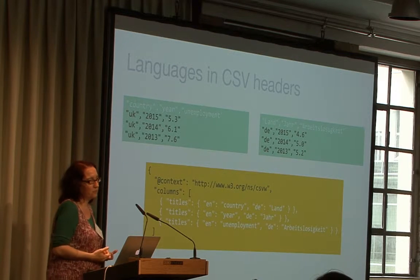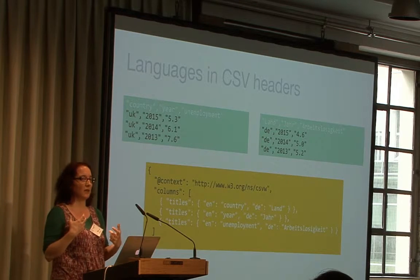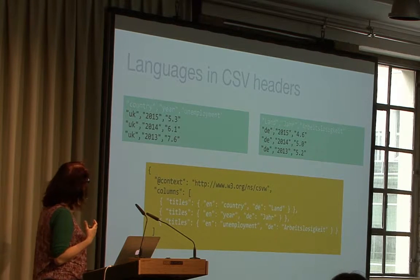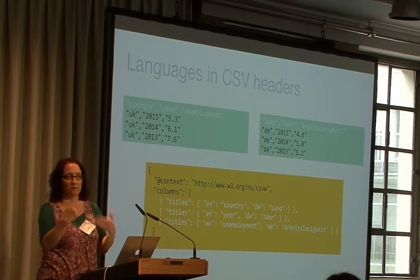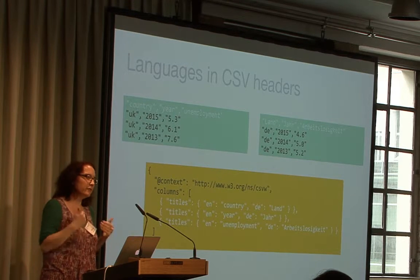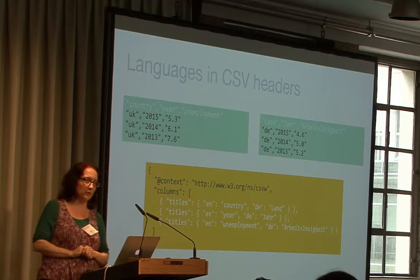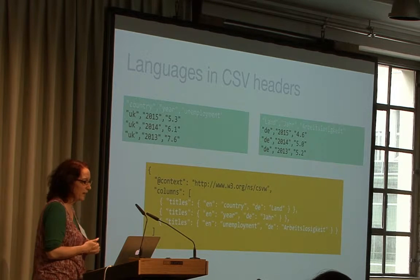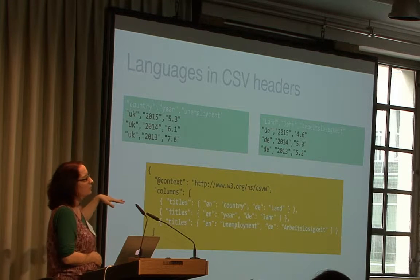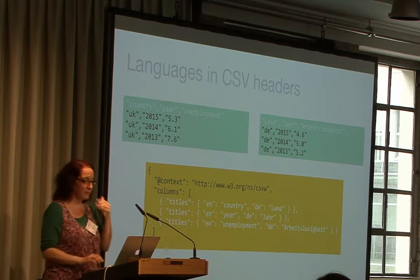That flexibility becomes particularly useful when you have a CSV format you want used in different locales. For example, if you're collecting unemployment statistics from multiple countries, you might want to enable people who don't speak English as their first language to use their own language in column titles, because it's a human format as well as a machine format. So within CSV on the Web, you can say the title of this column will be 'country' in English and 'land' in German, for example.